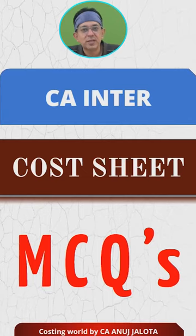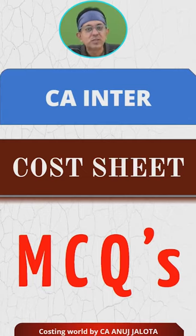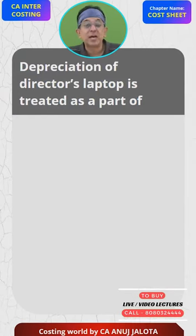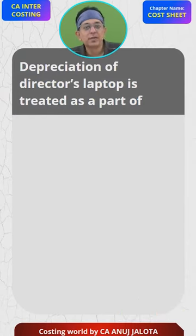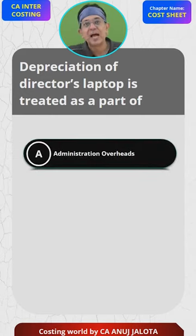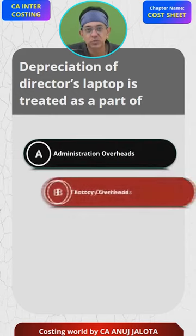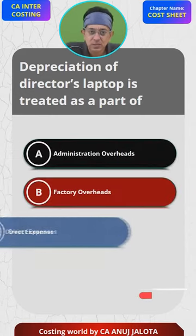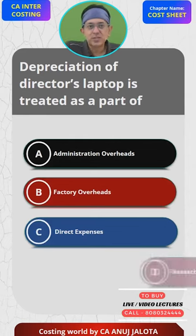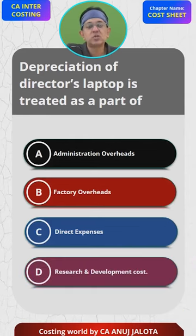Cost sheet MCQs — let's do them. Depreciation of a director's laptop: A) Administration overheads, B) Factory overheads, C) Direct expenses, D) Research and development costs.